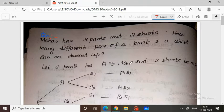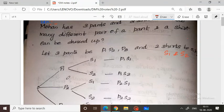Let the pants be P1, P2, P3, and the two shirts be S1 and S2. Now, first of all, let me draw a tree diagram. The tree starts with P1, P2, P3.